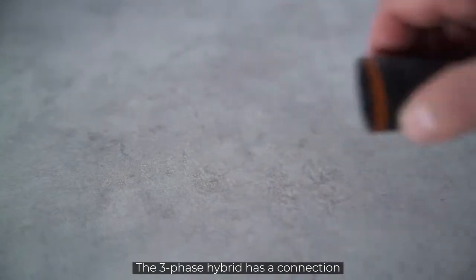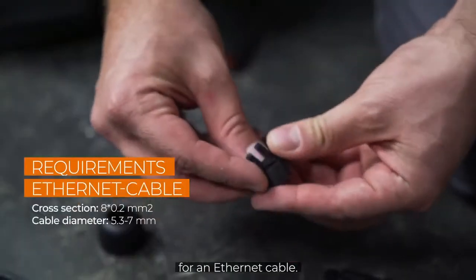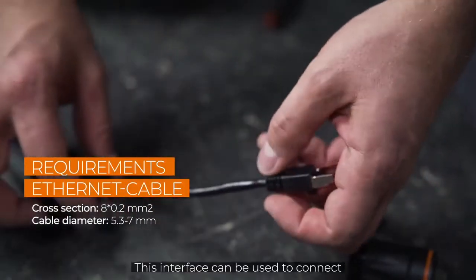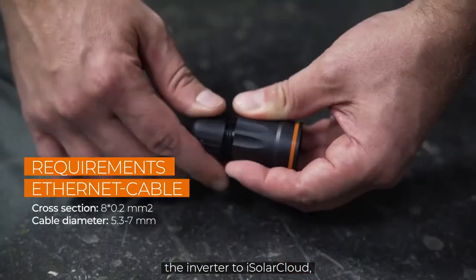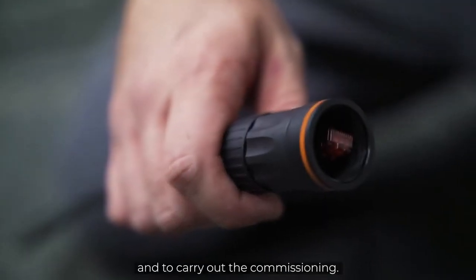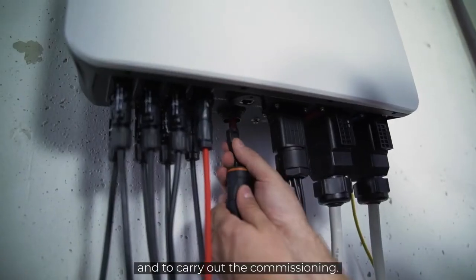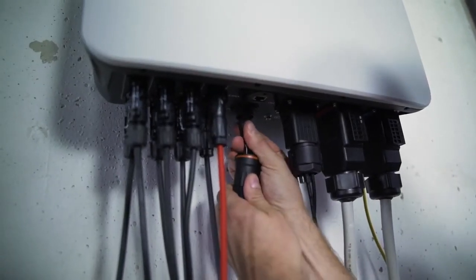The three-phase hybrid has a connection for an Ethernet cable. This interface can be used to connect the inverter to iSolar Cloud, Modbus TCP and to carry out the commissioning. Plug it in. Done.